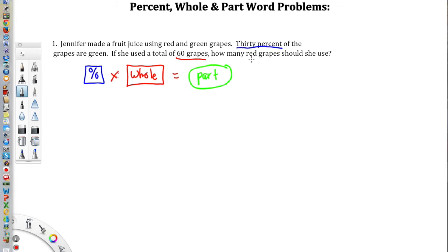How many red grapes should she use? And the red grapes, that is our part. Now, so they want to figure out how many red grapes we need. Well, up here it says 30% of the grapes are green. Here we have green, and here we have red. We want to know red.